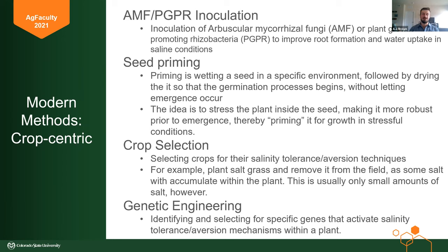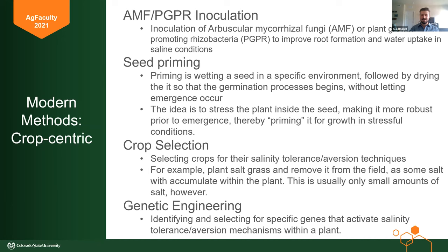Crop selection in a modern sense isn't just about switching to tolerant crops — there are ways to use cover crops to concentrate or remove salt from a field. For example, planting salt grass: the salt grass will actually absorb some of the salts into the plant itself, and if you remove those plants full of salt, you're removing salt from the system. However, this has only met with limited success because the amount of salt these plants can uptake is usually not enough to make a long-term impact, but every little bit helps.